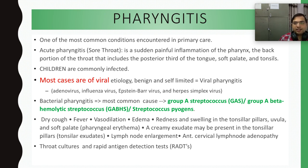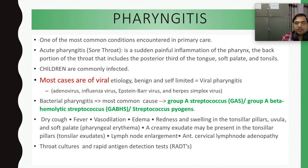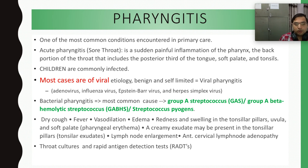Bacterial pharyngitis is less common than viral pharyngitis. The most common bacteria causing pharyngitis is Group A Streptococcus (GAS), previously called GABHS — Group A Beta Hemolytic Streptococcus — and now also called Streptococcus pyogenes. Symptoms include dry cough, fever, vasodilation, edema, redness and swelling in the tonsillar pillars, inflamed uvula and soft palate, and a creamy exudate at the tonsils called tonsillar exudate, which is the characteristic feature of GAS infection.